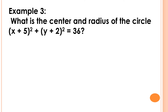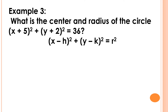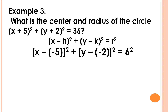For example number 3, what is the center and radius of the circle? The quantity of x plus 5 squared plus the quantity of y plus 2 squared is equal to 36. First step, we're going to write the given equation in the standard form. The equation will be the quantity of x minus negative 5 squared plus the quantity of y minus negative 2 squared is equal to 6 squared. Note that x plus 5 is the same as x minus negative 5, and y plus 2 is the same as y minus negative 2, and 6 squared equals 36.